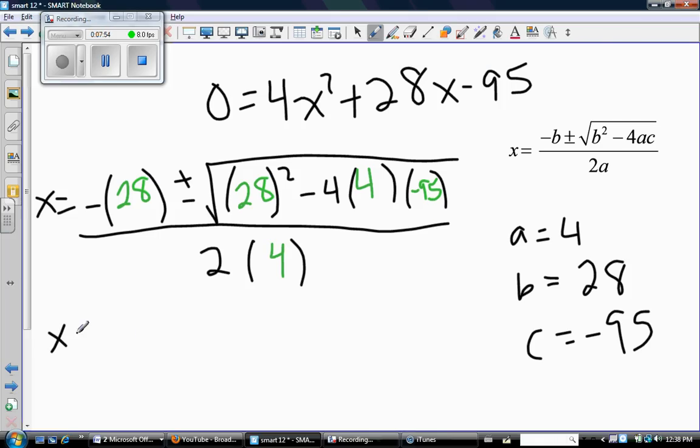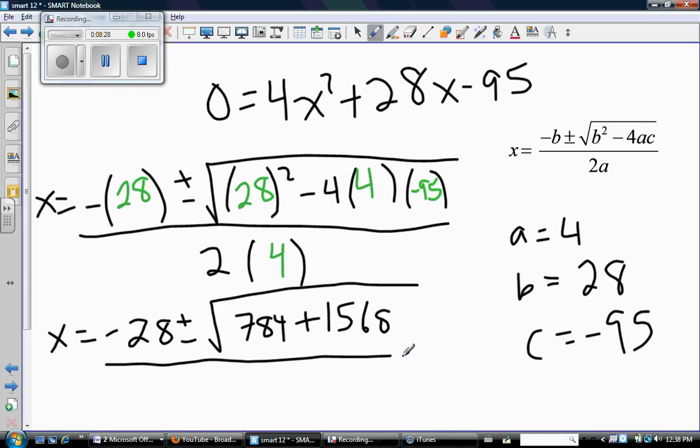So there's my substitution, and now I'm just going to do the math. So x equals negative 28. And obviously the part that's under the square root is really important that you're being careful. So 28 squared is 784. And then here I have minus 4 times 4 times 95. Well, 2 negatives is going to make this positive. And then I'm just going to do in my calculator 4 times 4 times 95. And that's positive 1520. And this is going to be over 2 times 4 is 8.